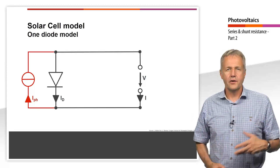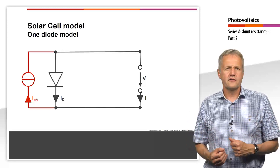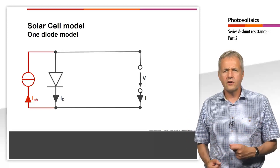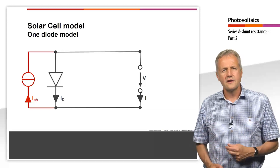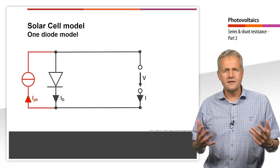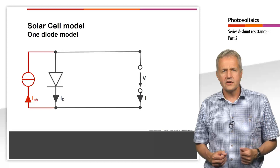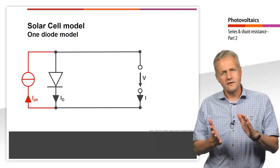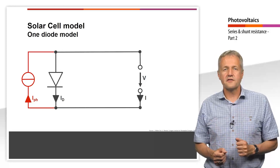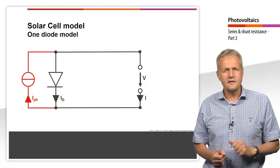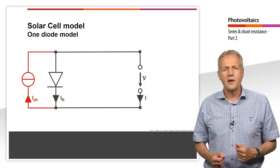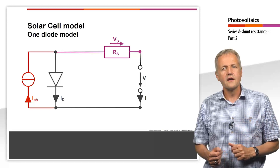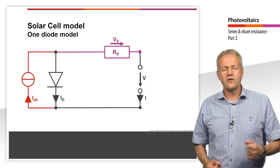However, in a real solar cell, a number of losses occur. First of all, in a real solar cell there are ohmic losses. They occur due to the resistance of the semiconductor material, the contacts and the leads, and the contact-semiconductor interfaces. These losses can be modeled by a so-called series resistance, or series resistor, which is connected in series with the solar cell.